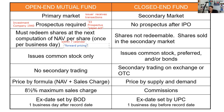That's called forward pricing, and that's very testable on all the various exams — this idea of doing business based on the next computation. The mutual fund has to calculate the NAV at least once per business day. In an open-end fund, it would be impossible for you to get something less than the NAV. The only time you could end up receiving less than the NAV for your mutual fund shares is if it was a closed-end fund.